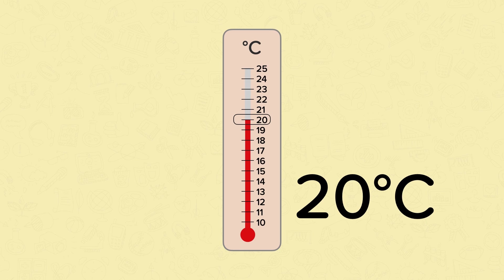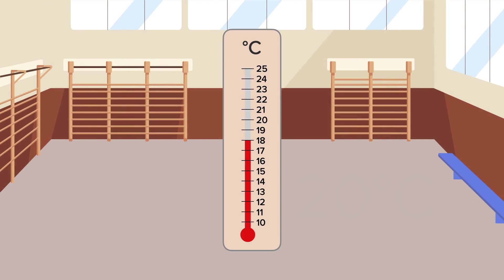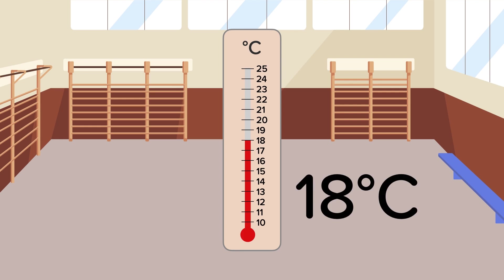This is a comfortable room temperature. If you're inside and it doesn't seem too hot or too cold, the temperature is probably close to 20 degrees Celsius. Now let's look at measuring the temperature in some different rooms around a school. In the hall, the temperature is 18 degrees Celsius. We know this because the red liquid in the thermometer has reached 18 on the scale.